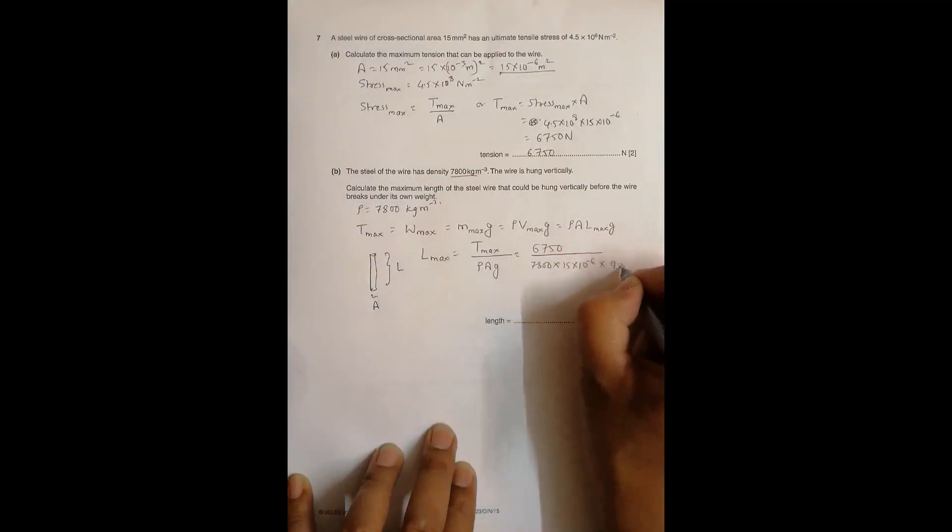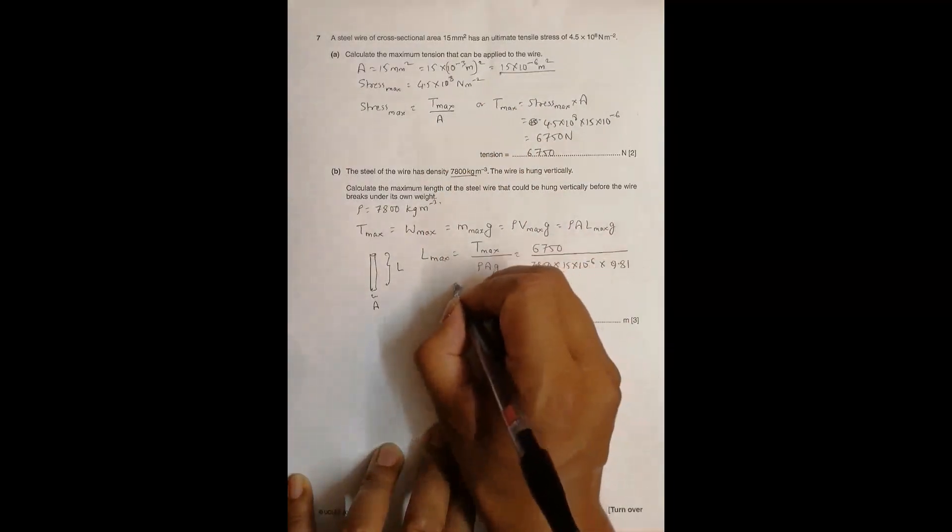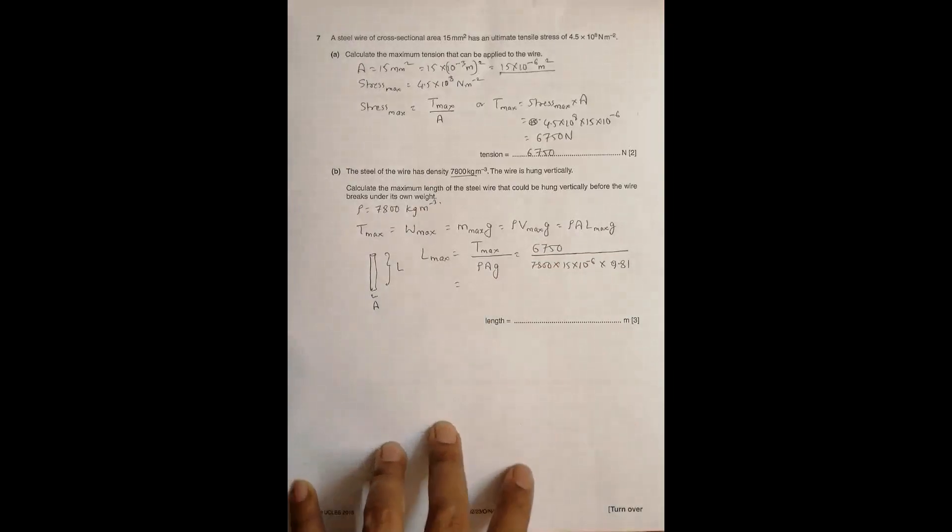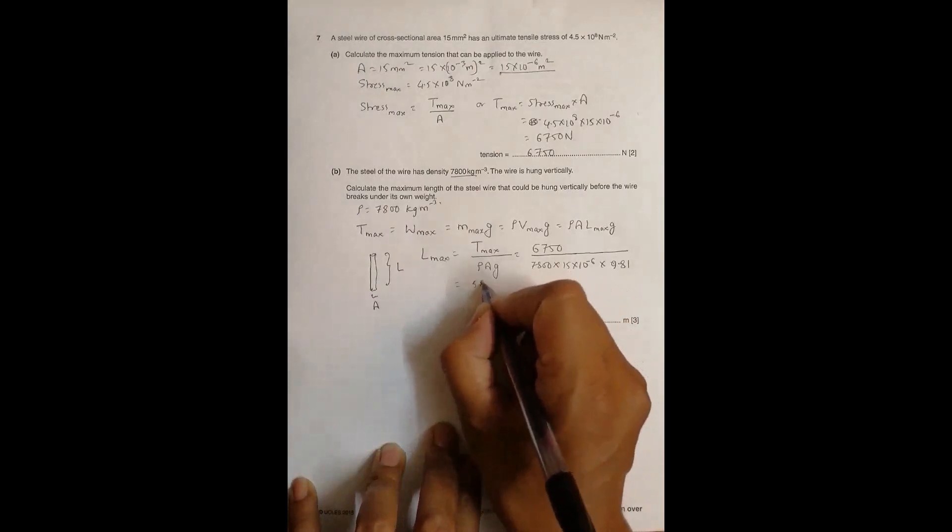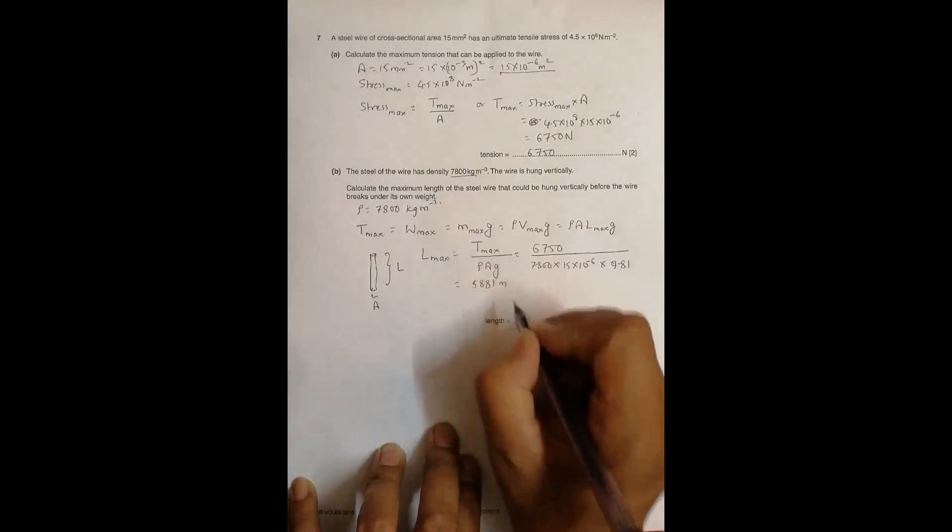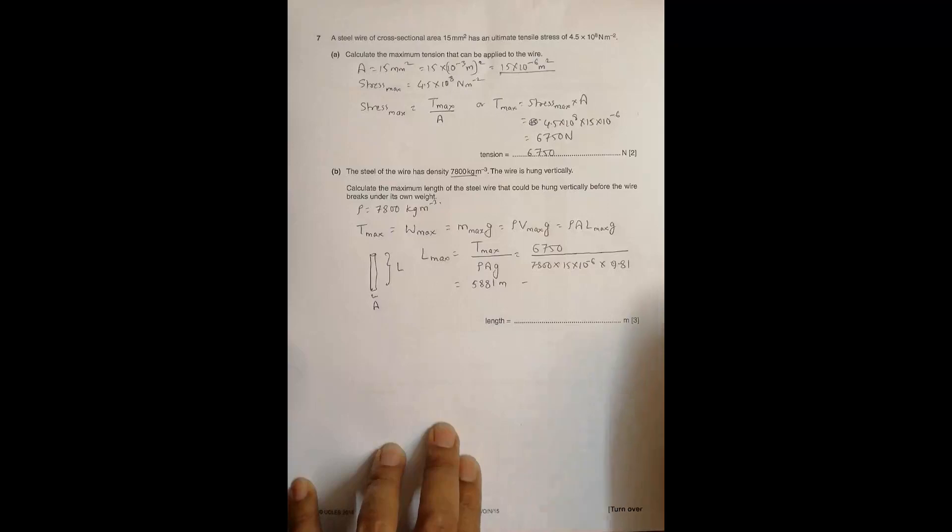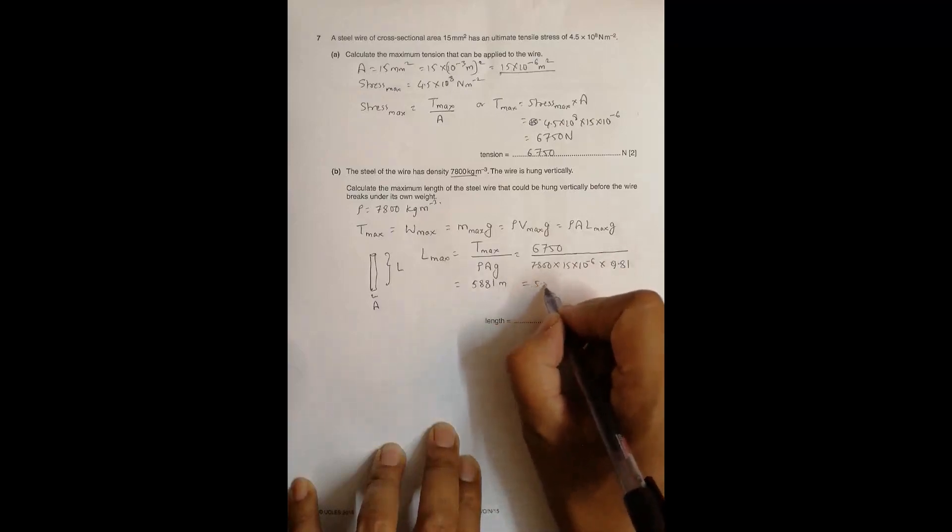And then g is equal to 9.81. So when I do this calculation, 6750 divided by all this, the whole thing will come out to be equal to 5881 meters.